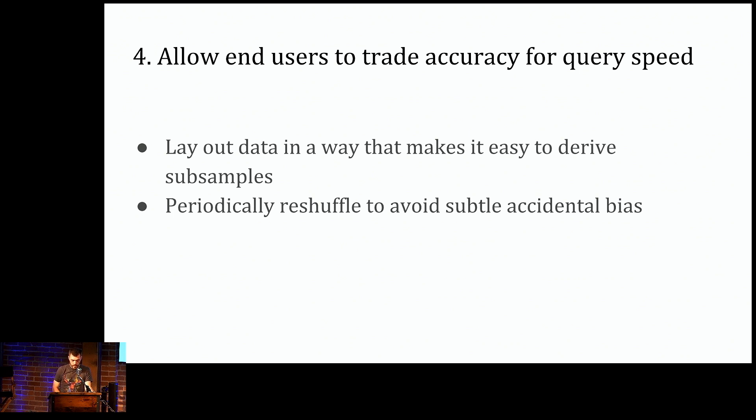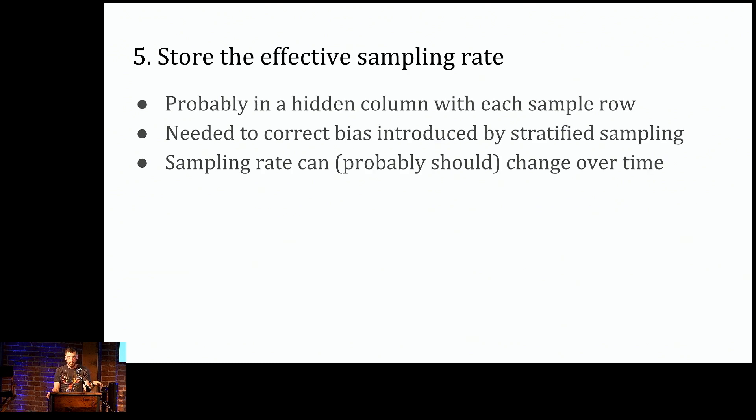You either give it a time bound, where you tell it to answer the query as accurately as possible within the given time, or you give it an error bound, where you allow it to take as long as it needs to achieve the given error. Personally, I really like the idea of the time constraint because it allows you to iterate rapidly on your queries. And in any case, you still know what error your result has because it's returned to you in the result. And you can make an informed judgment on whether it's good enough for your use case or not. To make this possible, BlinkDB physically lays out data on disk to make it easy to generate subsamples. It also periodically reshuffles the samples to avoid subtle false correlations that arise from working with the same sample over and over. Lastly, a pet peeve of mine with sampling systems: always store the sampling rate that you used in each row. And BlinkDB does this in a hidden column in each row.